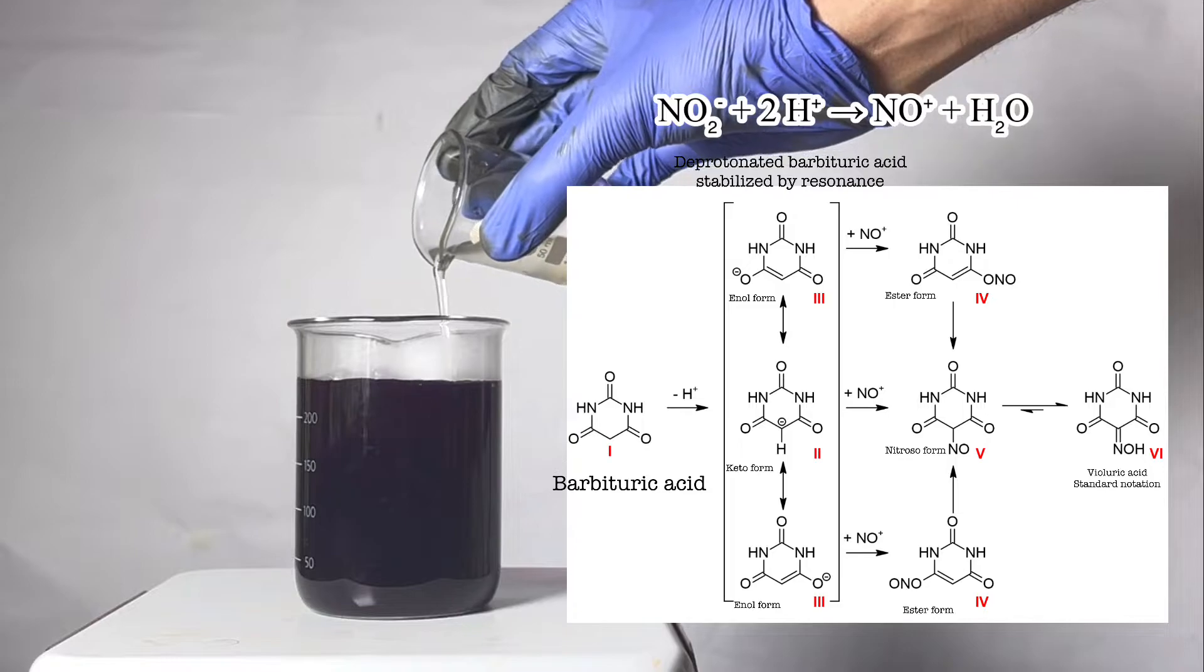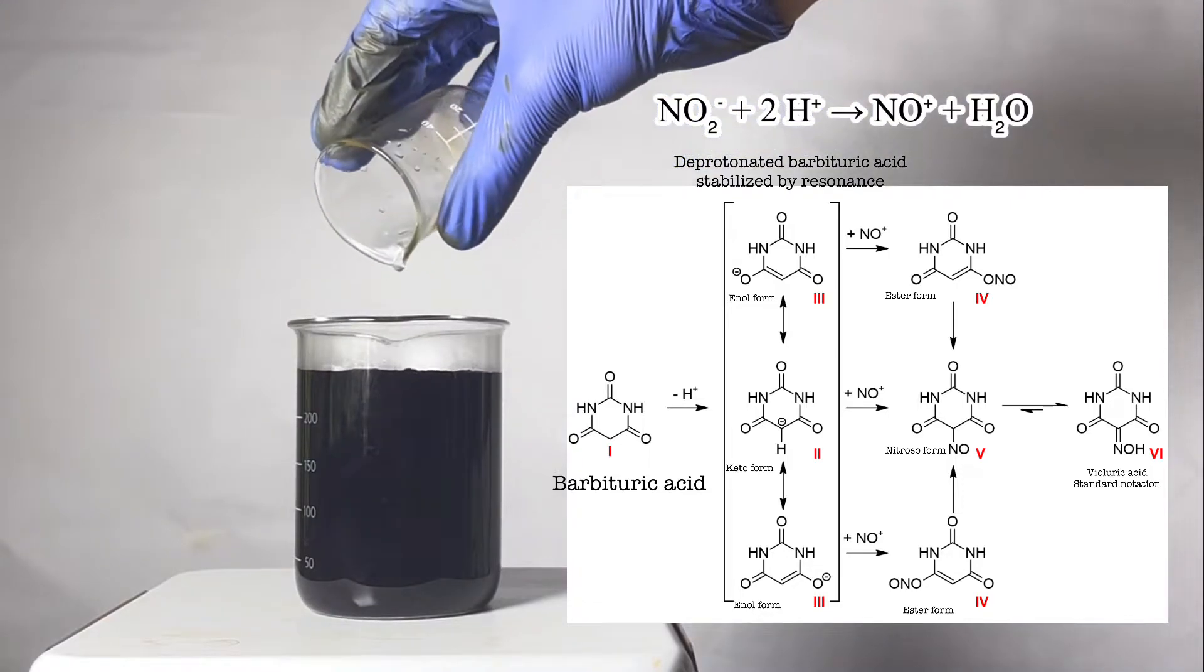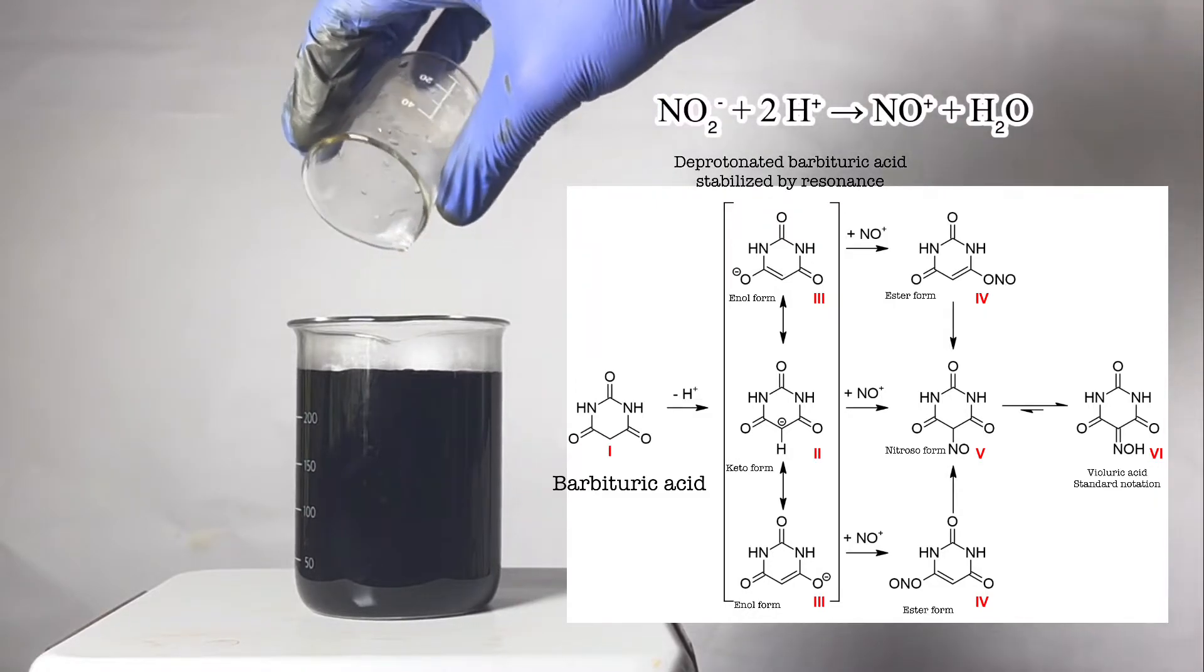Now let us see what is the reaction that is happening. First of all, nitrous acid is formed from the hydronium ions released by the barbituric acid and the sodium nitrite.